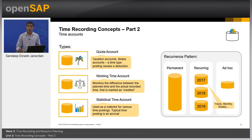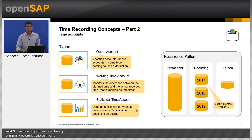The second is the working time account. As we have seen in the previous unit, it collects the deviations of the employee's recorded time when compared to their work schedule. And lastly, we have the statistical time account, which can be seen as a collector of time records based on configuration rules that a time administrator might want to report on. They typically accrue time postings since they are used as data collectors.